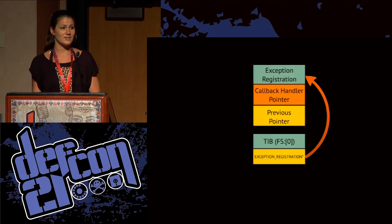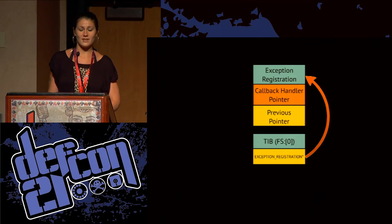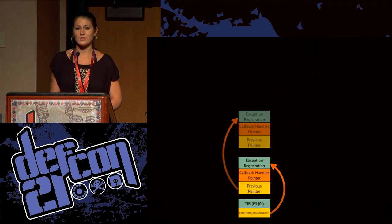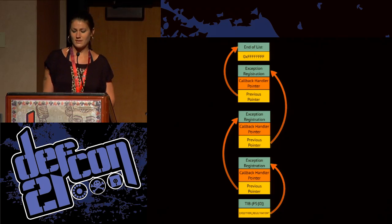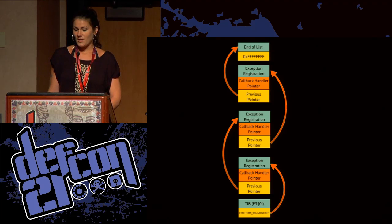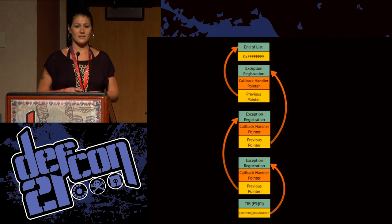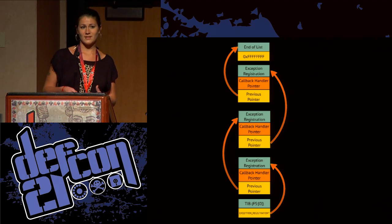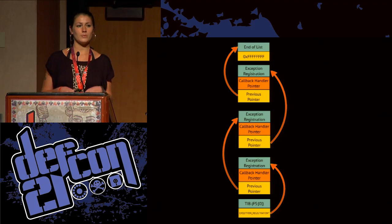The FS register at offset zero points to an exception registration structure. In the simplest case, the structure contains a pointer to the handler which could eventually handle the thrown exception, and a pointer to the previous registration block. At the end of the chain, there's a default handler and a minus one. What's really interesting for a malware author is that he can register his own exception handlers, deliberately throw exceptions, and point execution flow to some other piece of the code.